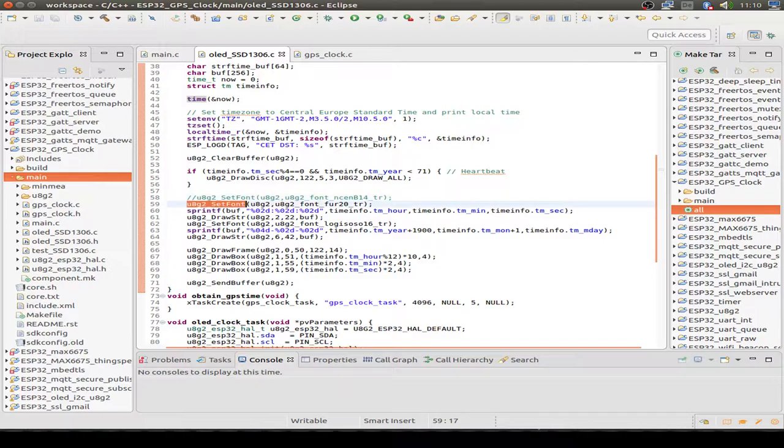Then I print out with the U8G library all the readings to the display. I set the font data, then print out the time, the hour, the minutes, the seconds. Then I change the font and also write the year, months and day to the display. Then I have some kind of bar graph display for the hour, minute and seconds.